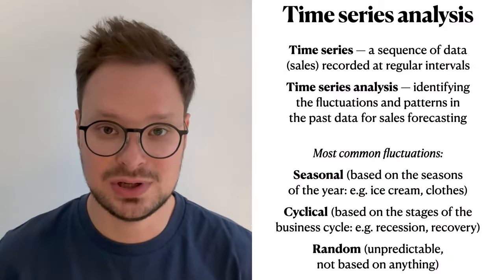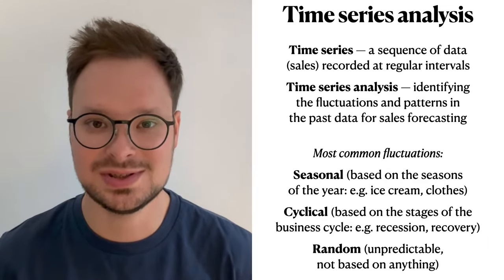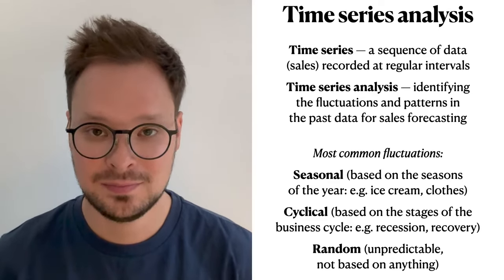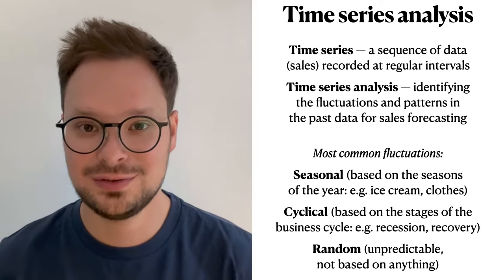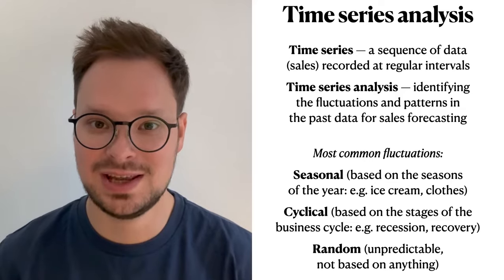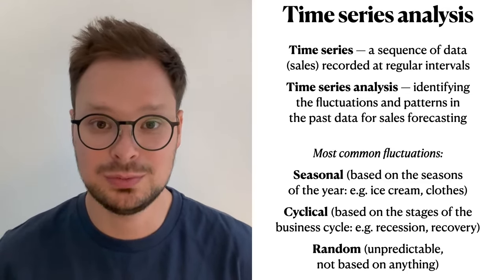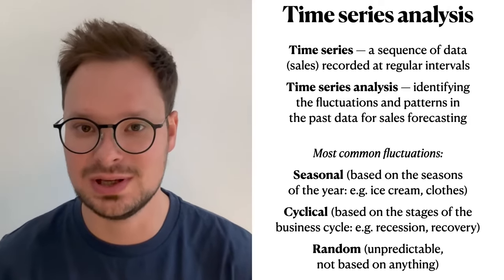This brings us to the third sales forecasting technique, which is called time series analysis – identifying the patterns and fluctuations in past data in order to have more accurate sales forecasting. A time series is a set of past data recorded at regular intervals, and for our purposes that is sales data. There are three main kinds of fluctuations: seasonal, cyclical, and random. Seasonal fluctuations are caused by seasons. For example, ice cream sales have the highest fluctuation from the trend in summer, and sales of warm clothing are higher in winter than in summer.